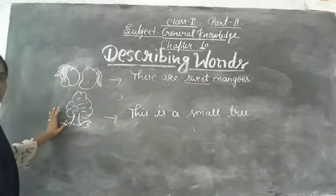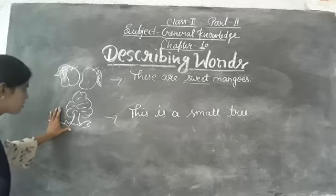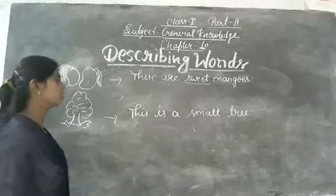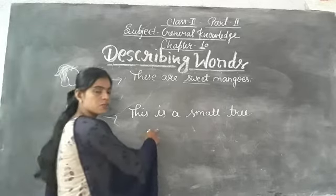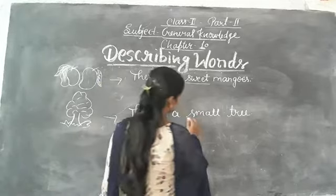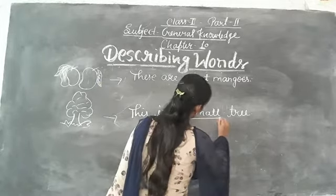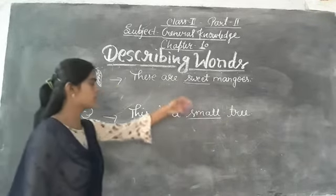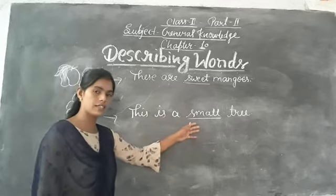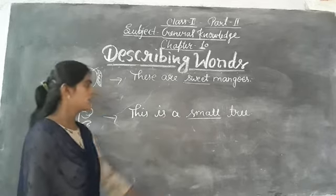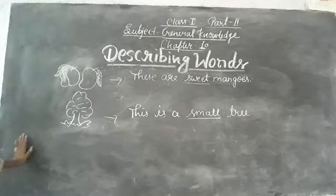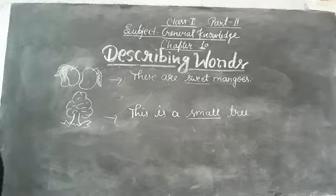This is a tree. How is this tree? This is a small tree. So 'sweet' and 'small' are adjectives here, which refer to the quality of a noun or pronoun. That's all. Thank you.